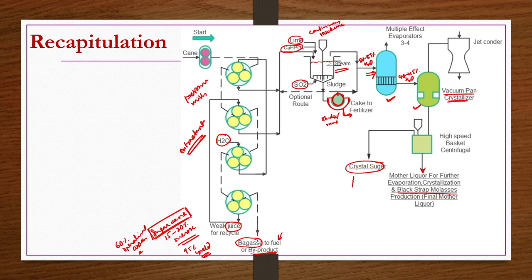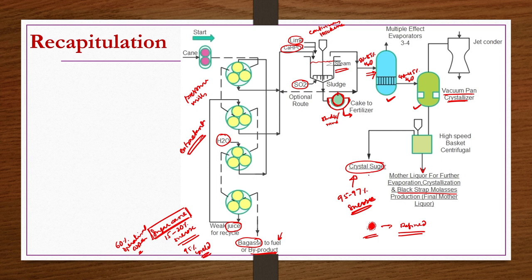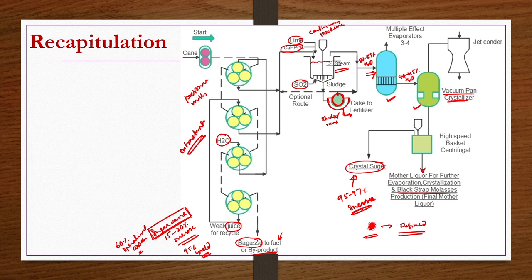The syrup solution collected as mother liquor can be sent for further evaporation or crystallization depending on its quality, or if sucrose content is very low, it can be taken as molasses for fermentation industries. The crystalline sugar may have 95 to 97 percent sucrose content. However, the crystals may not be white in color — they may be slightly brownish because molasses can be attached as a layer to the surface of sugar crystals. For white sugar, refining is required.